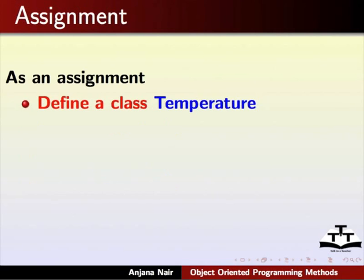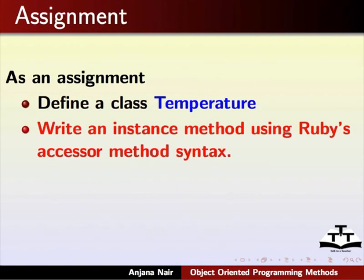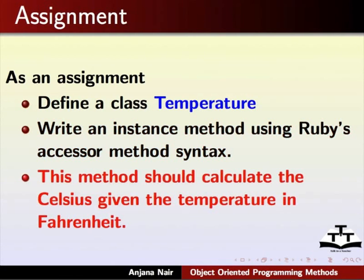As an assignment, define a class named Temperature. Write an instance method using Ruby's accessor method syntax. This method should calculate the Celsius for the given Fahrenheit.